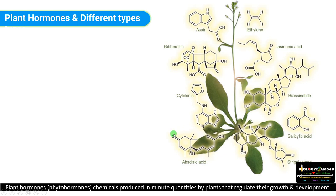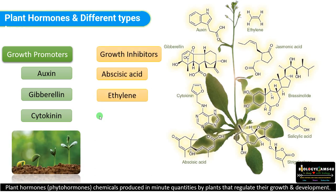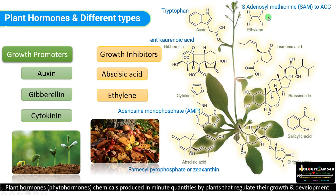Finally, plant hormones are chemicals produced in minute quantities by plants that regulate their growth and development. Growth promoters include auxin, gibberellin, and cytokinin, whereas growth inhibitors include abscisic acid and ethylene. Auxin, gibberellin, and cytokinin are involved in cell division and differentiation, while the growth inhibitors are involved in ripening, senescence, and adaptation to drought or stress. Auxin is synthesized from tryptophan, gibberellin from kaurenoic acid, cytokinin from AMP as an adenine derivative, abscisic acid from xanthine, and ethylene from S-adenosyl methionine via ACC (aminocyclopropane carboxylic acid). Other plant hormones like jasmonic acid and salicylic acid are involved in plant defense.